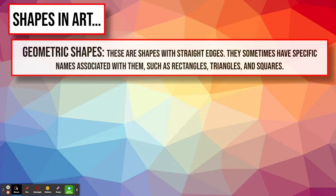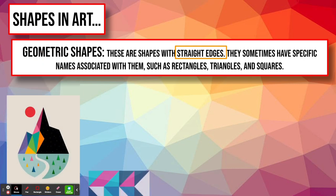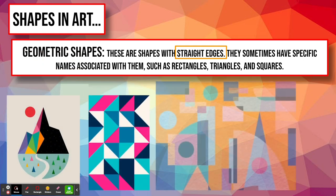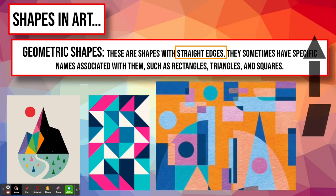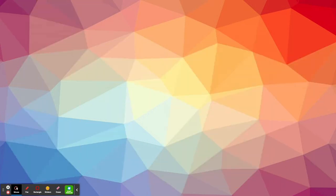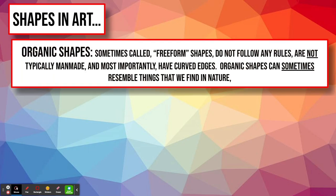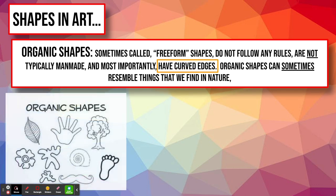Geometric shapes are shapes with straight edges. They sometimes have specific names associated with them such as rectangles, triangles, and squares, but not always. Just because we say geometric shapes doesn't mean we're referring only to those named shapes — we're mainly referring to shapes that have mostly straight edges. Organic shapes are drastically different; they do not follow any rules, are not man-made, and most importantly they have very curvy edges. They are sometimes the shapes we find in nature, but not always.